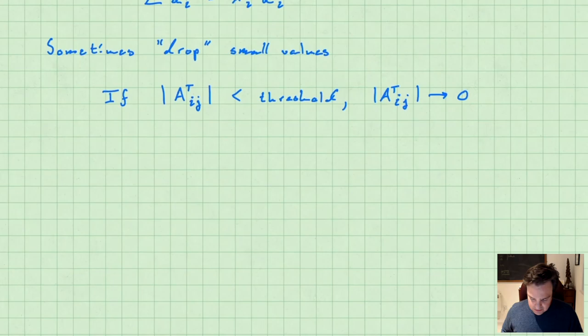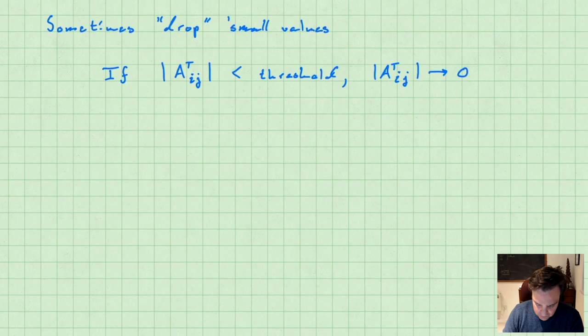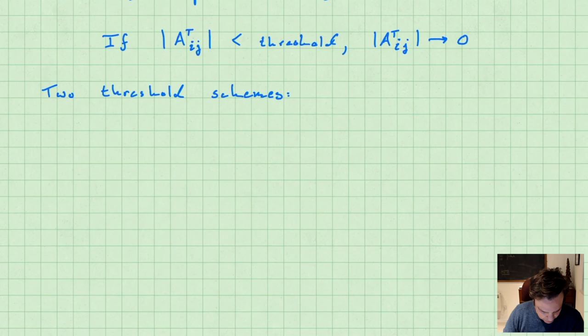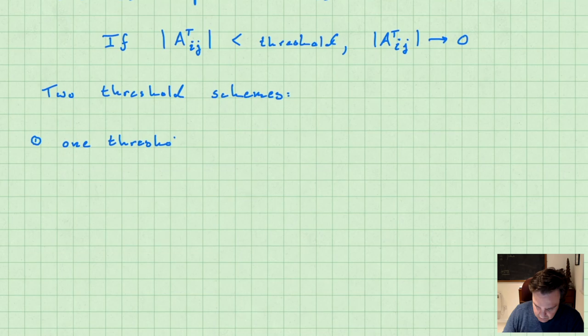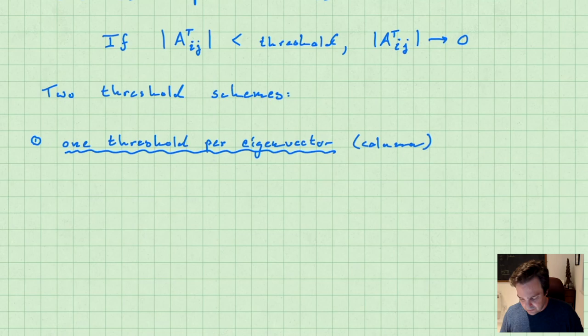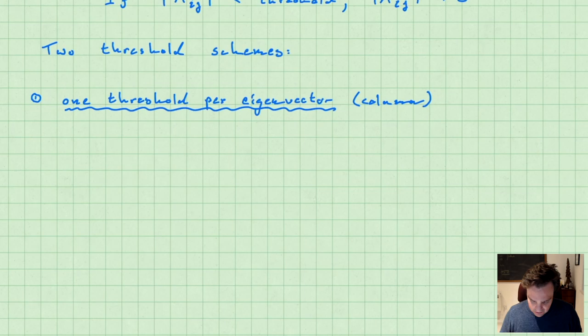I want to describe two different schemes for picking that threshold — two threshold schemes. The first one is where you set one threshold per eigenvector, or per column in the matrix of loadings. One threshold per eigenvector means you do something like the following specific example.